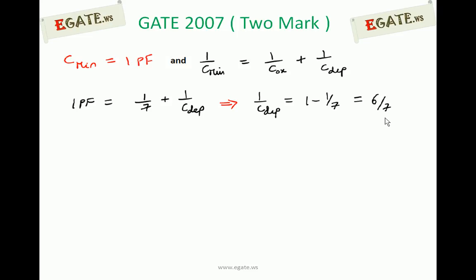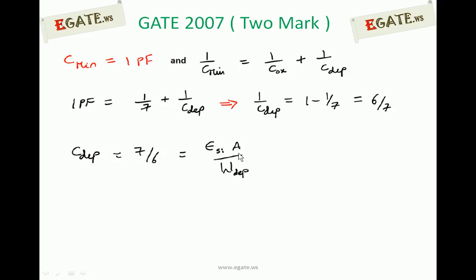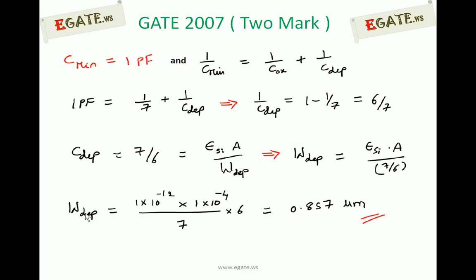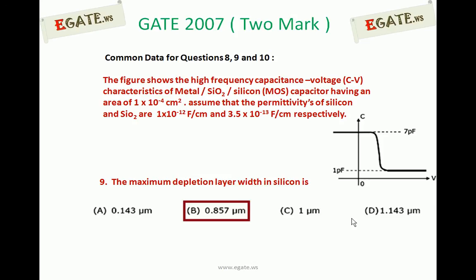From the depletion layer capacitance we can calculate the depletion layer width. Using the parallel plate capacitance formula C = εA/d, the distance d is the depletion layer width W_d, and ε is the permittivity of silicon (not silicon dioxide). So W_d = ε_silicon × A / C_depletion = (1×10⁻¹² × 1×10⁻⁴) / (6/7). The maximum depletion layer width is 0.857 micrometers, which is the correct answer.